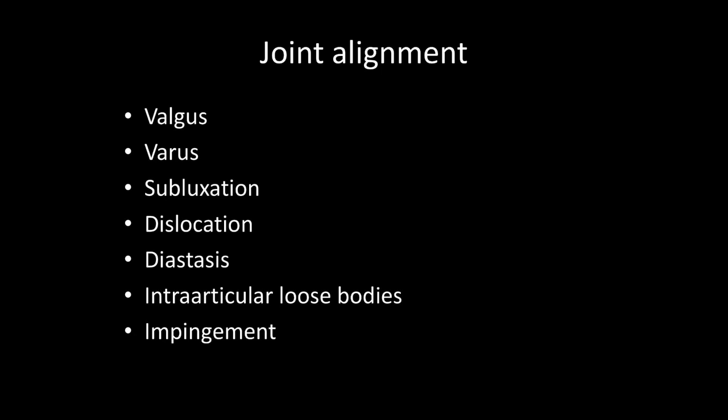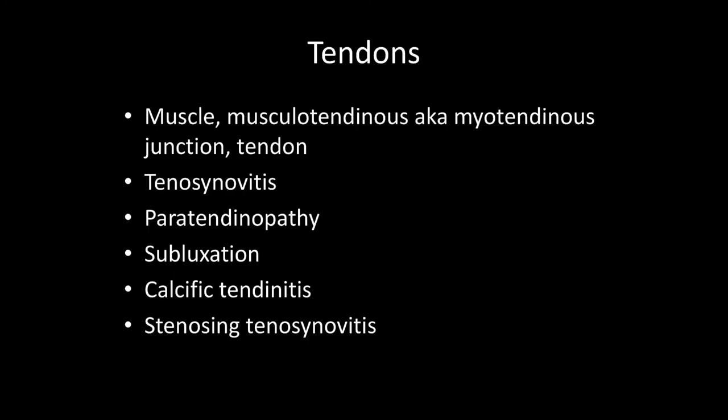Intraarticular loose bodies can also develop not from fractures but because of arthritis or other pathologies such as tumor-type pathologies within the joint. The history given is often that the patient can't extend or can't flex, and then there's an obvious reason why. Impingement pathologies are basically when something is preventing something from moving normally — an impingement could be secondary to a bony structure, a soft tissue structure, or hardware, such as a screw sticking into a joint when it's not supposed to.